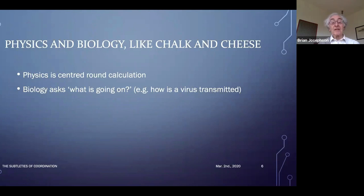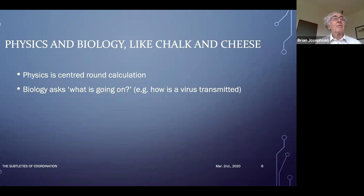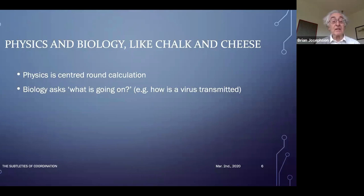How physicists and biologists work are like chalk and cheese. Physics is centred around calculation — your goal is to put in the numbers and equations and get out the results. Biology, on the other hand, is more like asking what is going on. A very current illustration is the question of how a virus is transmitted — we want to know what is going on with the coronavirus because that helps us decide what to do. Calculation has a minor role; we don't deal with exact equations.